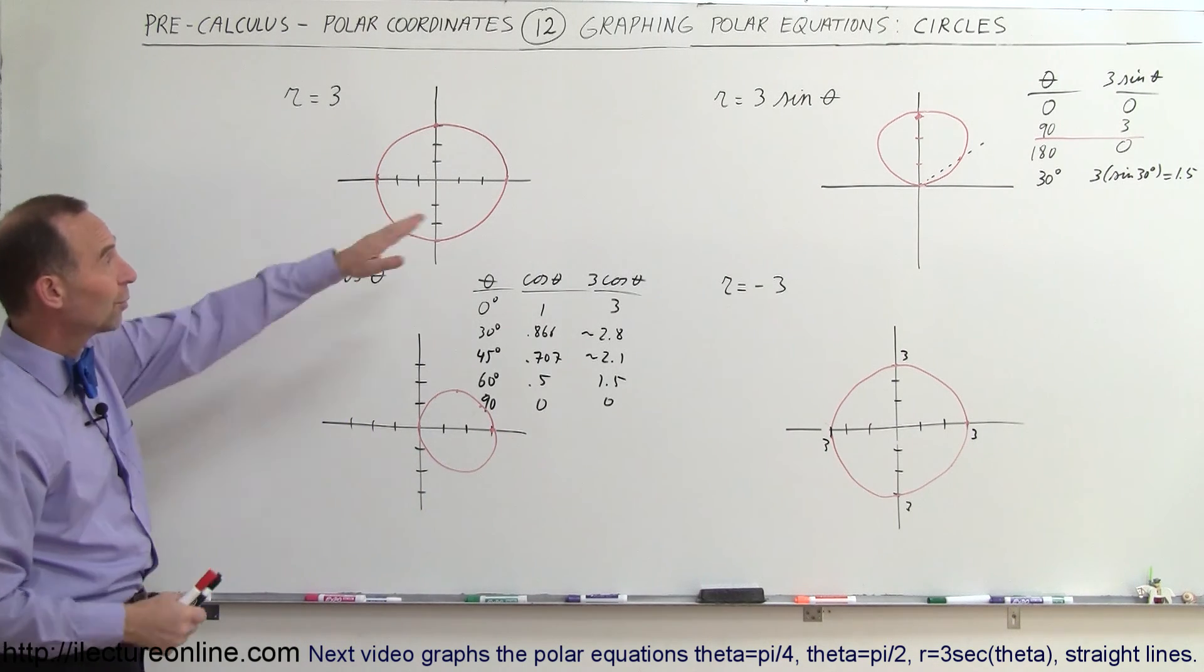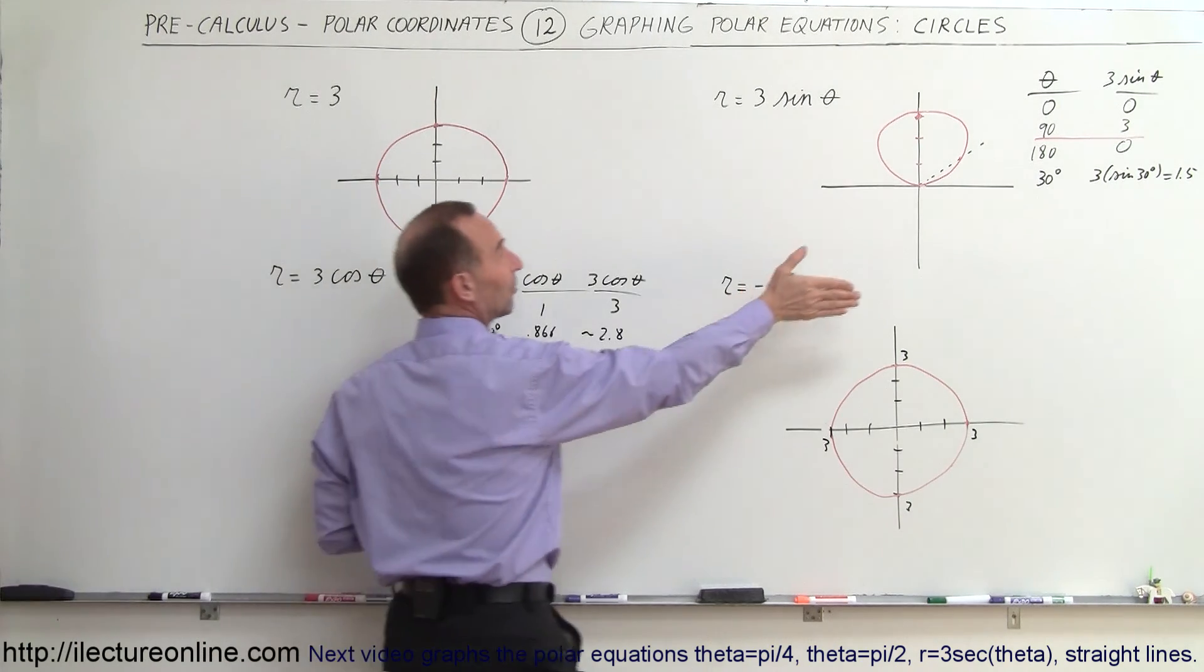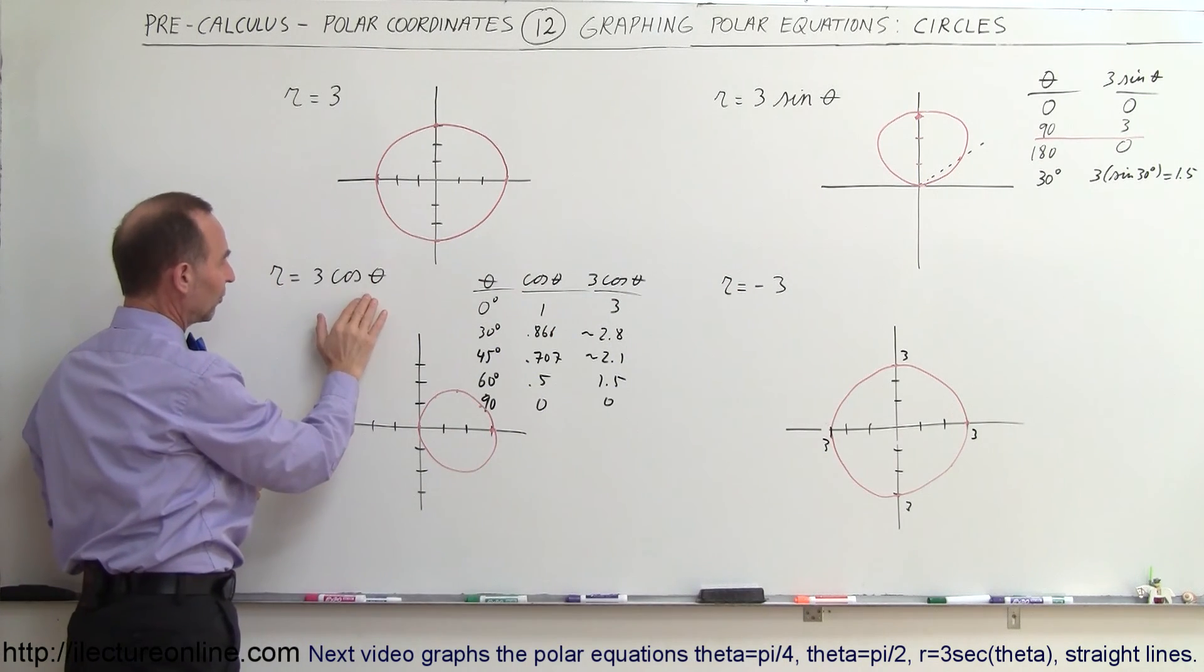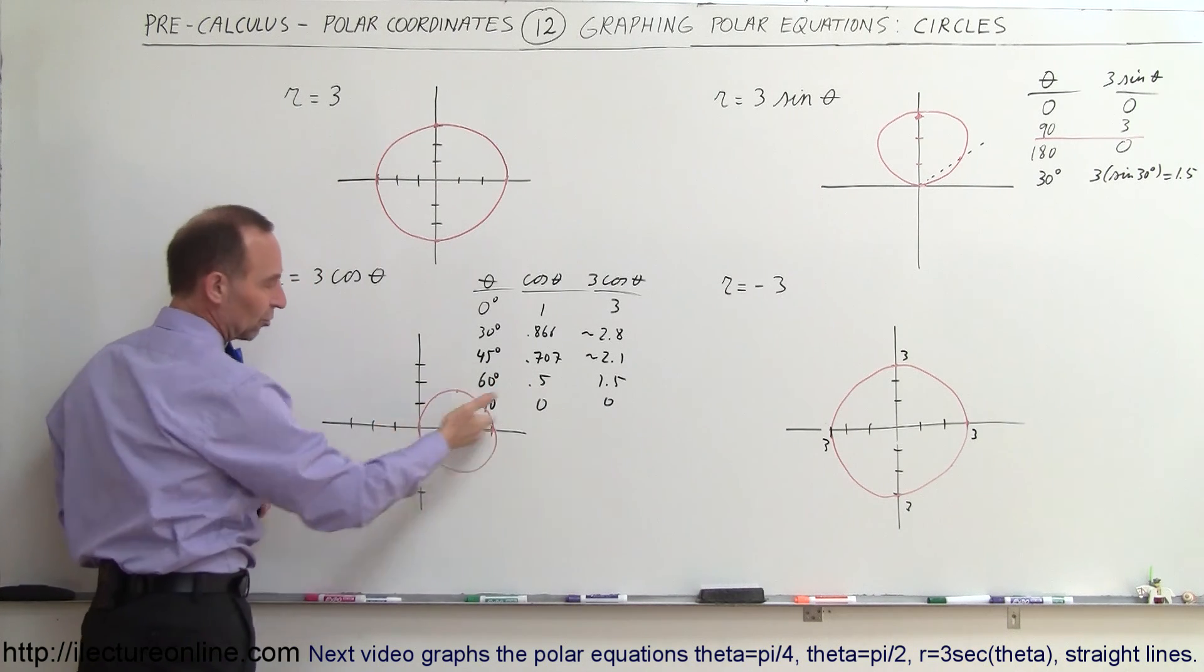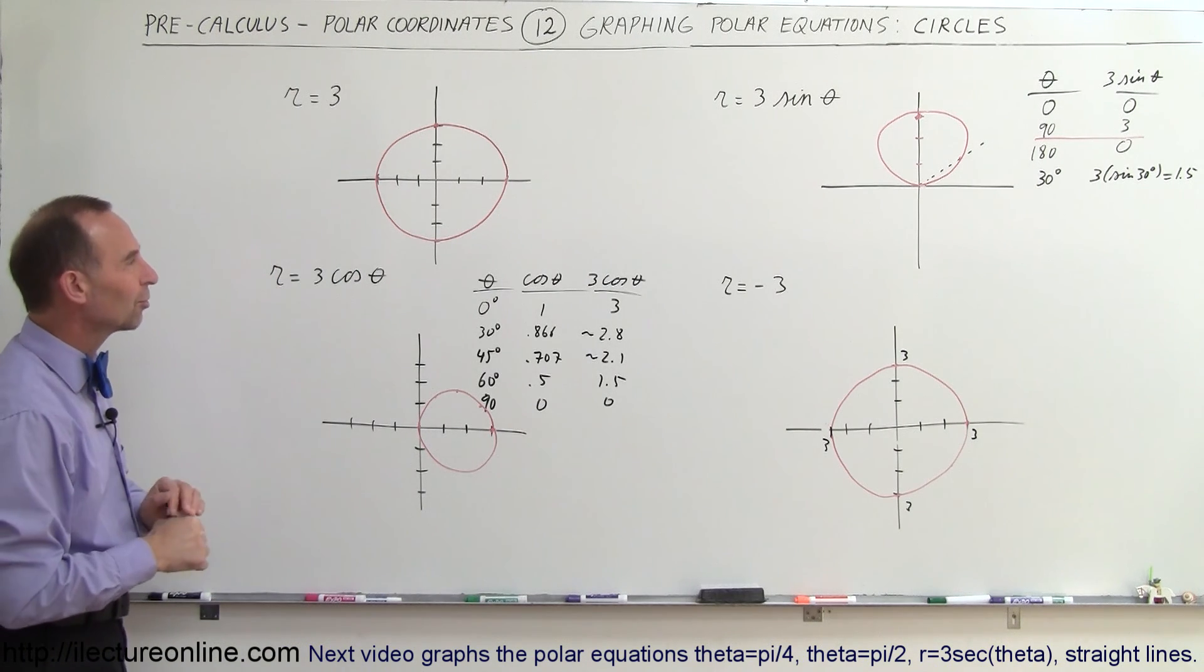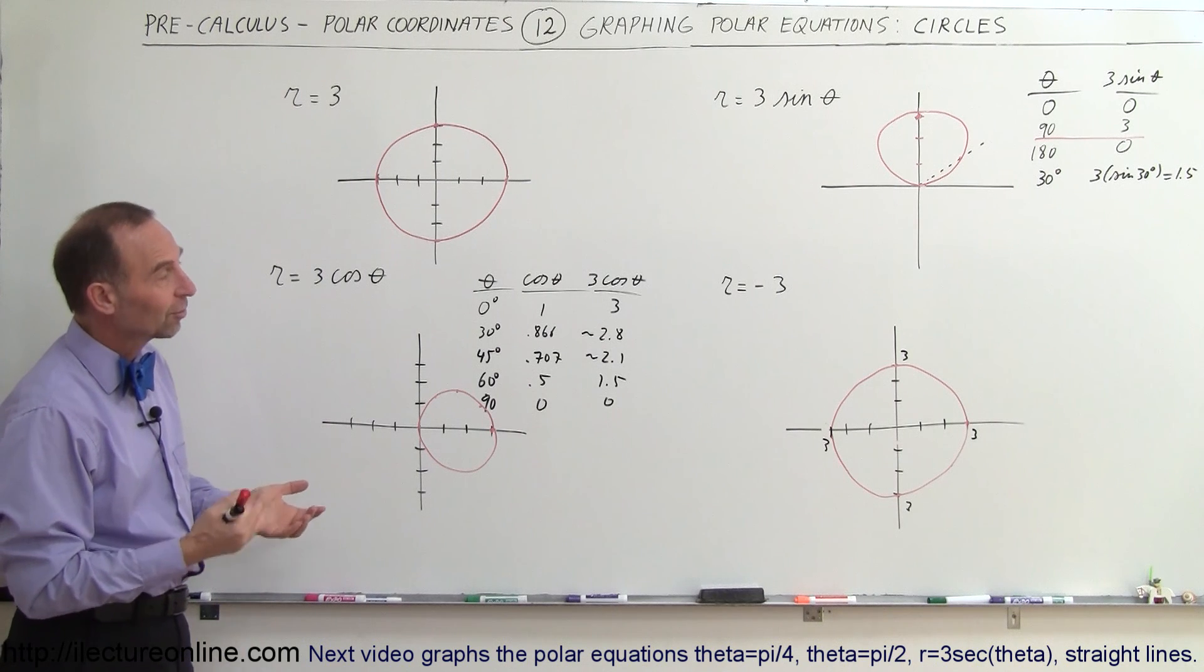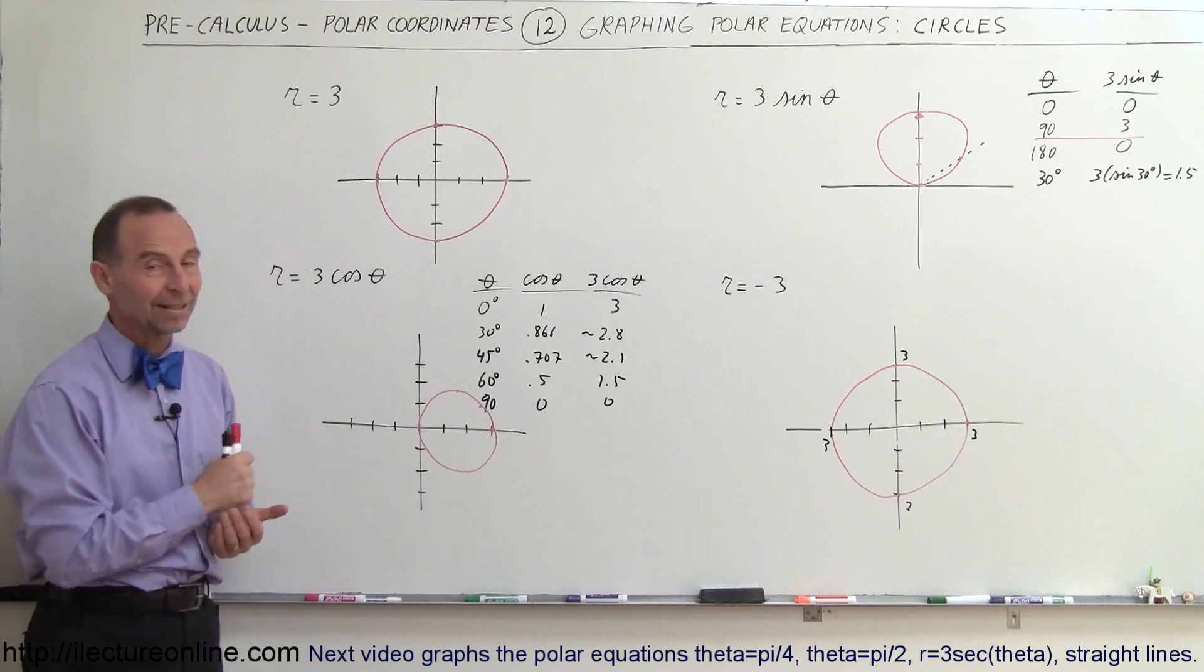Notice that when we have 3 times the sine of theta or 3 times the cosine of theta, we do get complete circles. But the sine of theta, the graph is directed in the y direction, so to speak, in the up direction. And for 3 times the cosine of theta, then we get a circle in the x direction, or I'd say in the theta equals 0 direction. If you talk about polar coordinates, we probably should do it in terms of angles. So here we have four different equations, four circles in polar coordinates. And so it's interesting that, yes, you can define a circle using polar equations like that. And that's how we do that.